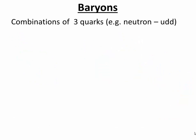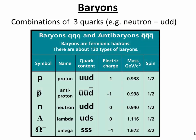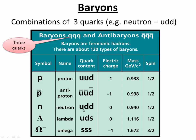Now we'll look in more detail at baryons. They're a combination of three quarks — for example, a neutron. Here we have a table of different baryons and anti-baryons. Notice there are always three quarks. The proton has up, up, down — three quarks, that is a baryon. An anti-proton is anti-up, anti-up, anti-down. A neutron is up, down, down. Three quarks makes a baryon, or three anti-quarks makes an anti-baryon.